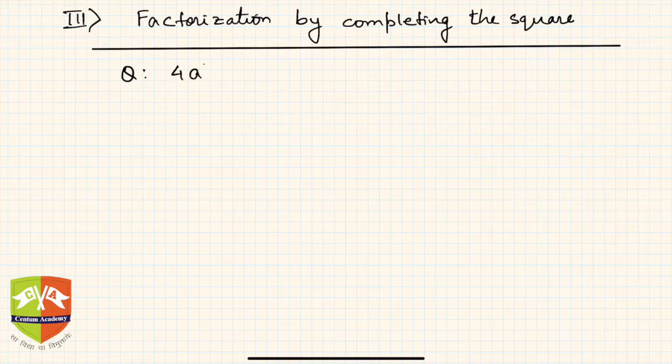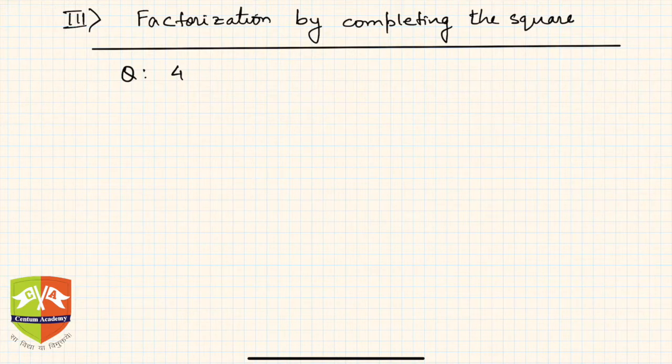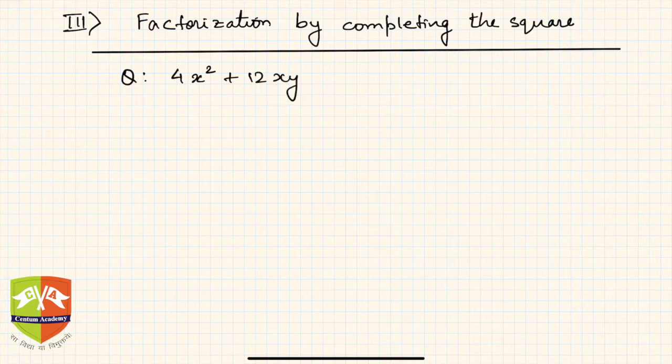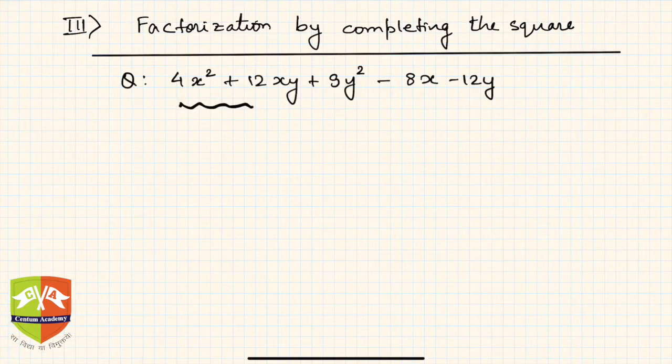First of all, let us take this question: 4x² + 12xy + 9y² - 8x - 12y. If you observe, there are these three terms: 4x² + 12xy + 9y². It looks like they are going to complete a square.